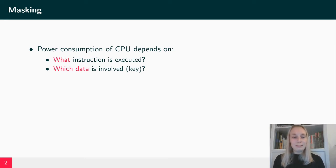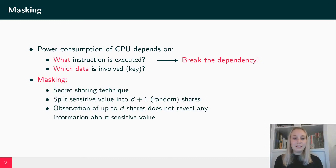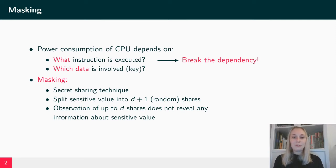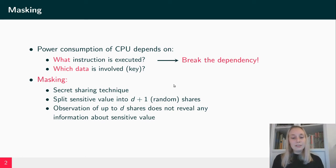In order to prevent power analysis attacks, we have to break the dependency between these things and the power consumption. This can be done by applying a countermeasure called masking. Masking is a secret sharing technique where we split our sensitive value — the value we want to protect — into multiple random shares. If the attacker can observe up to d of these d+1 shares, it will not reveal any information about the sensitive value.